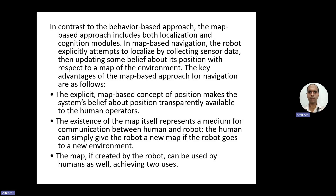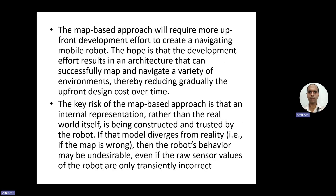Furthermore, the map created by the robot can be used by a human or operator as well — once the robot has built up the map in its memory and reached the goal position, that map is also available to the operator. The map-based approach will require more upfront development effort to create a navigating mobile robot. However, the hope is that this effort results in an architecture that can successfully map and navigate a variety of environments, thereby reducing the upfront design cost over time.